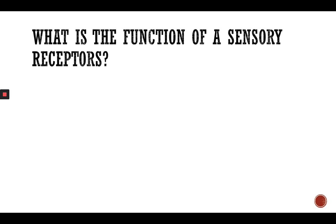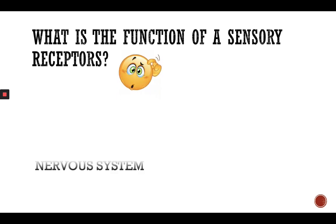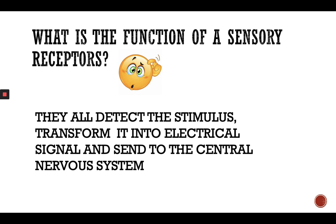What is the function of sensory receptors? Probably the majority of you know from primary science that sensory receptors detect a stimulus, transform it into an electrical signal which is then sent to the central nervous system, where it is detected and interpreted, and then comes back and we respond to the stimuli.